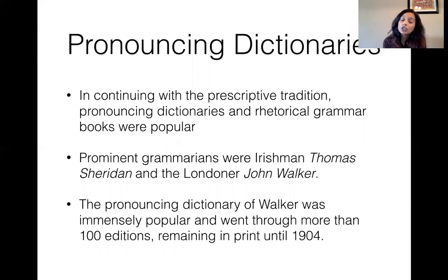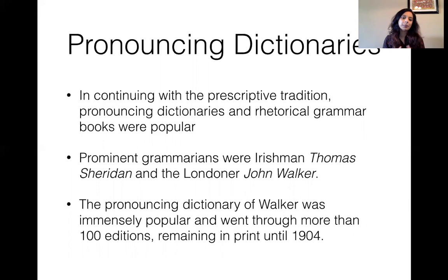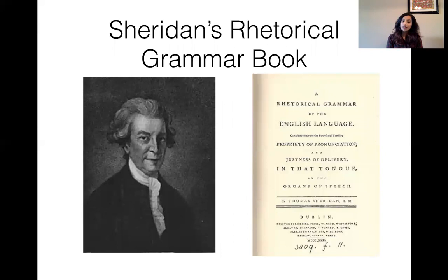Another thing that came about was not just dictionaries with lists of vocabulary items, but also pronouncing dictionaries — because this was a time when people really cared about how you would pronounce certain words of English. There were a lot of pronouncing dictionaries and rhetorical grammar books. Thomas Sheridan and John Walker were two grammarians really concerned about how to pronounce the English language. John Walker's book was immensely popular and many different editions were published. Here is Sheridan's rhetorical grammar book.